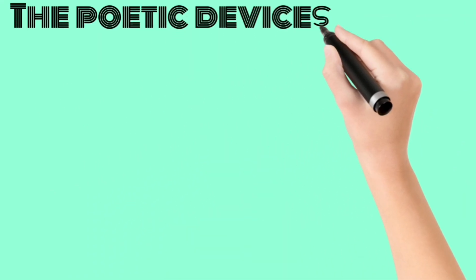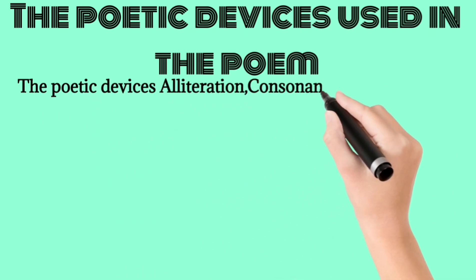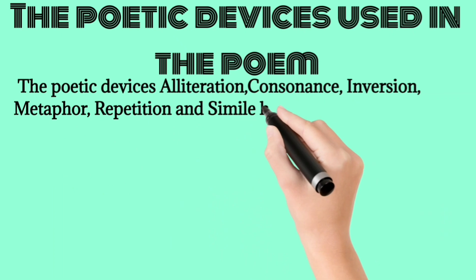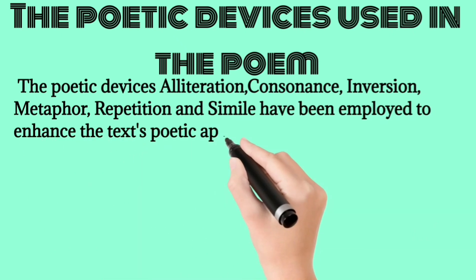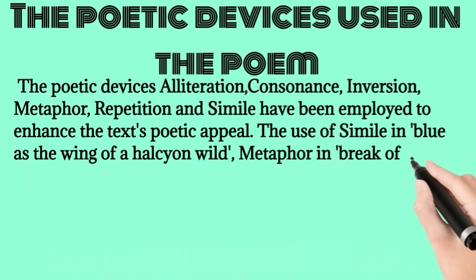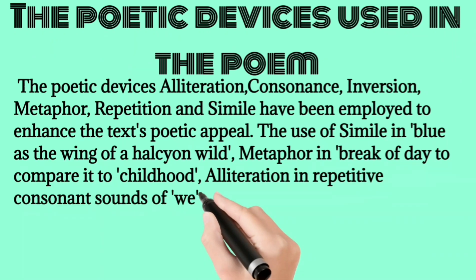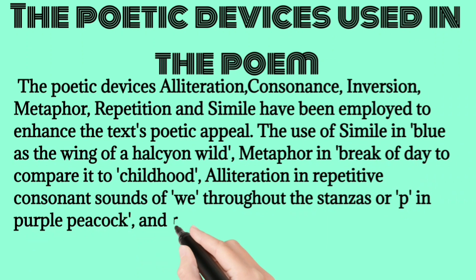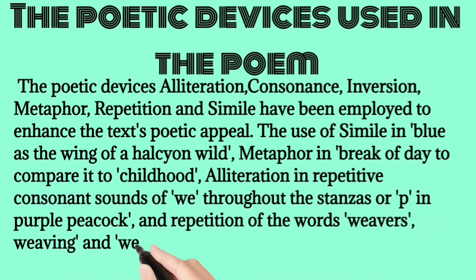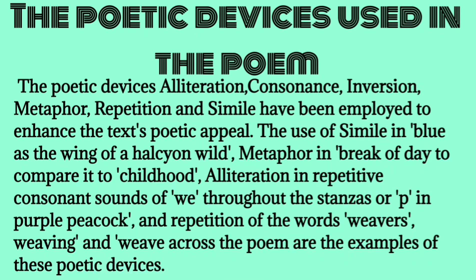Poetic devices used in the poem: Alliteration, consonance, inversion, metaphor, repetition, and simile have been employed to enhance the text's poetic appeal. The use of simile is seen in 'blue as the wing of a halcyon wild'; metaphor in 'break of day' to compare it to childhood; alliteration in repetitive consonant sounds of 'w' throughout the stanzas and 'p' in 'purple peacock'; and repetition of the words weavers, weaving, and weave across the poem.